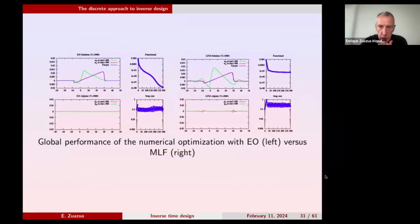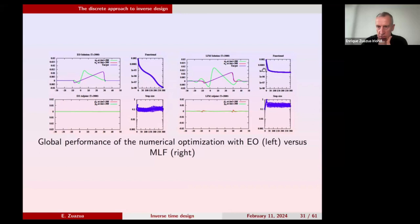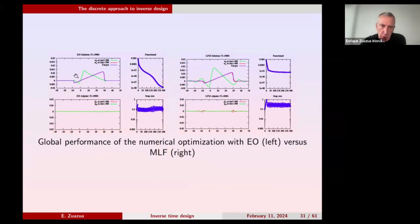According to our numerical experiments, there is more viscosity in Lax-Friedrichs than in Engquist-Osher. Having more viscosity is fantastic for forward resolution but dramatic for backward resolution. This is also why Engquist-Osher developed their numerical scheme — they observed that Lax-Friedrichs was convergent but too viscous, smearing the shocks out and not giving an accurate picture at future times. We see this now in a backward sense.